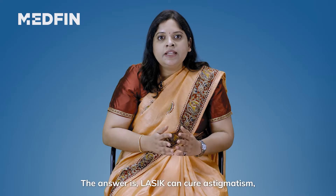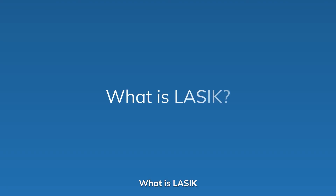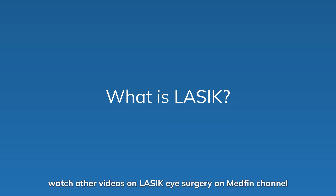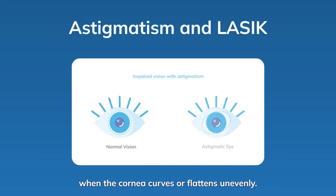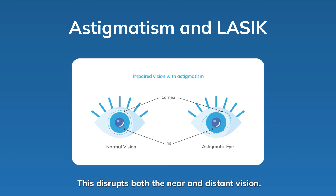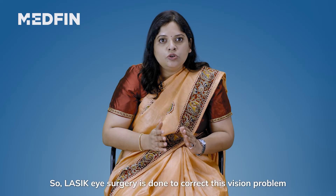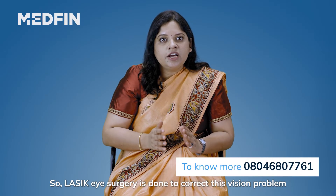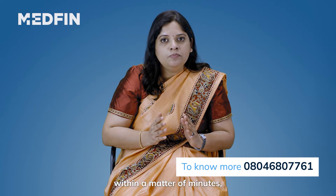So does LASIK cure astigmatism and presbyopia? The answer is: LASIK can cure astigmatism, but not presbyopia. Astigmatism happens when the cornea curves or flattens unevenly, disrupting both near and distant vision. The image is not formed at one point on the retina but at multiple points, blurring the vision.